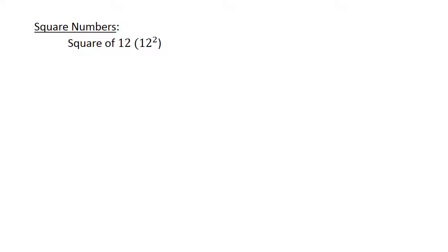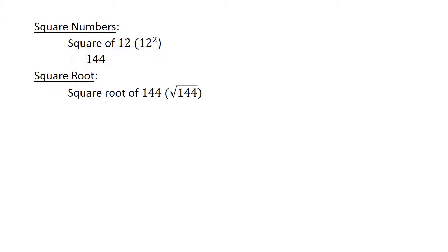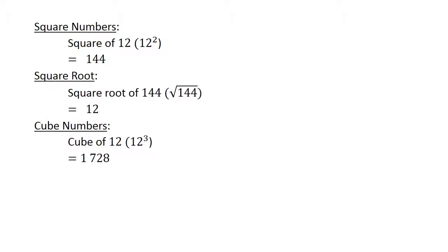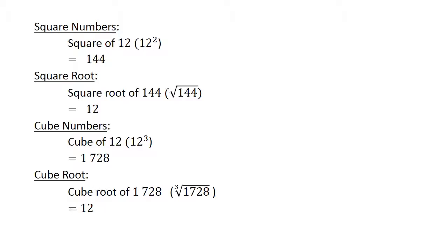Square numbers. The square of twelve equals one hundred and forty-four. The square root of one hundred and forty-four equals twelve. The cube number of twelve equals one thousand seven hundred and twenty-eight. And the cube root of one thousand seven hundred and twenty-eight equals twelve.